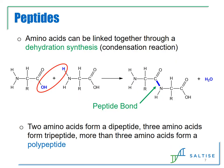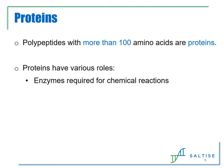Amino acids can be linked together through a dehydration synthesis that involves the amine end of one amino acid linking together with the carboxylic acid group of a neighboring amino acid. The result is the formation of a covalent bond called a peptide bond, along with the release of a water molecule. When there are more than three amino acids linked together, the resulting polymer is called a polypeptide. When more than 100 amino acids are linked together, the polymer is referred to as a protein.